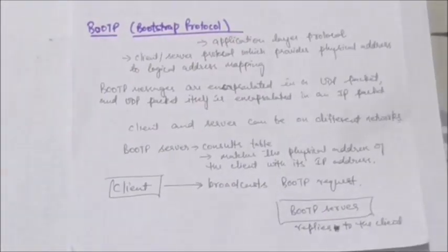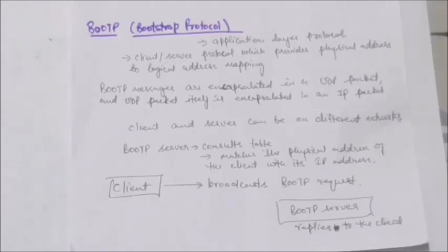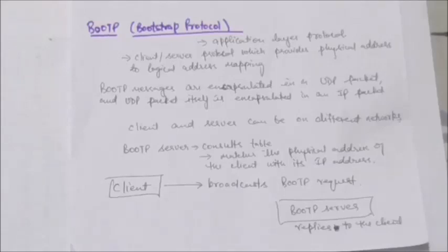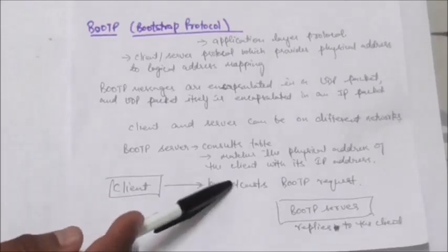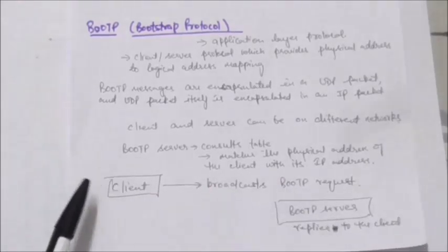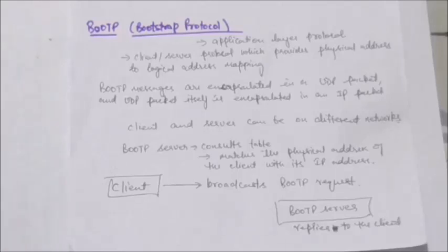In Bootstrap Protocol, the client can be in one network and the server can be in another network. When a client requests its IP address, the Bootstrap Protocol server consults a table which matches the physical address of the client with its IP address. When a client knows its physical address and needs its IP address, it broadcasts a Bootstrap Protocol request.